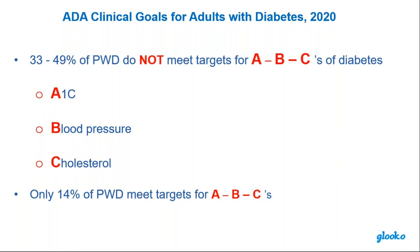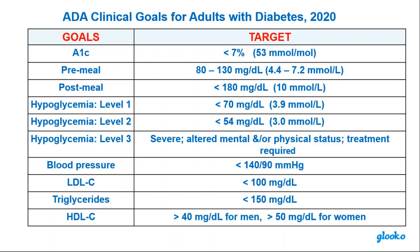Let's start with some ADA — American Diabetes Association — clinical goals for adults with diabetes. What's amazing to me is that 33 to 43% of our patients do not meet targets for A1C, blood pressure, and cholesterol. And only 14% of our patients with diabetes — PWD — meet all three targets for the ABCs. A little astounding.